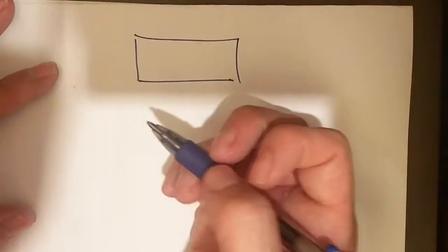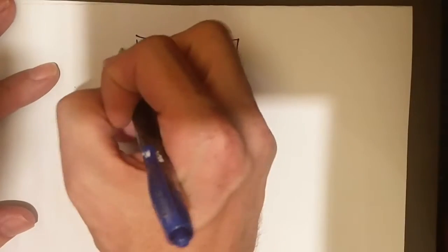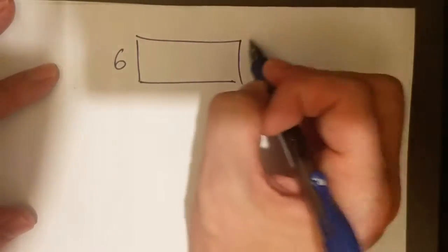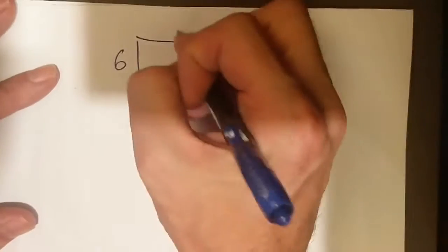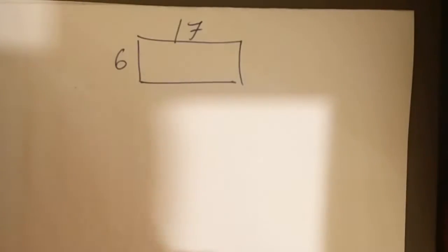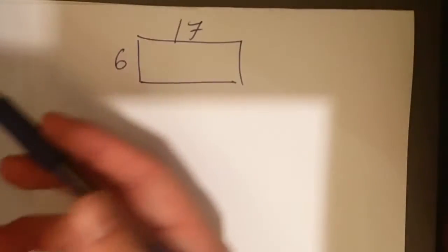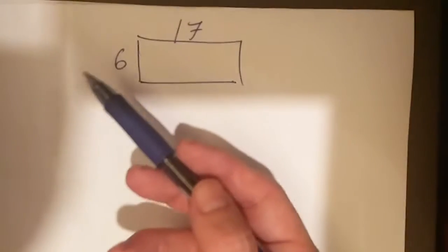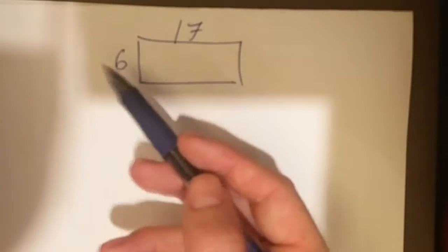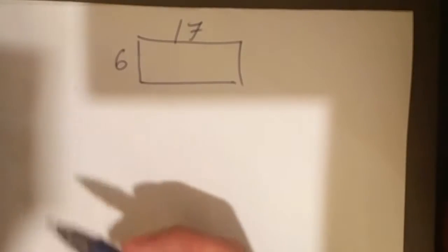If I use the same numbers as before, if you remember this was 6 and this was 12 and 5. Well what's that whole length? That whole length is 17. So I have a rectangle with a length and width, or base and height, of 6 and 17. What's the area of that rectangle?